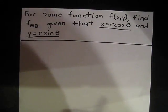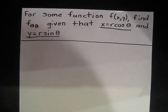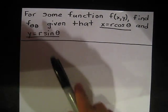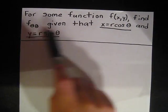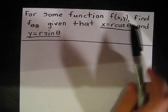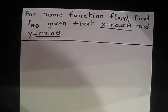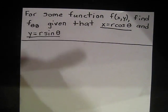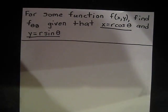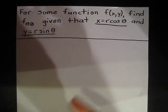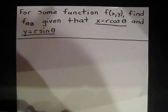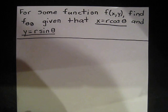The function at hand is a partial derivative problem. For some function f of xy, we need to find f sub theta theta, given that x is equal to r cosine theta and y is equal to r sine theta. This is a more challenging problem because we're not given a concrete function f of xy — it remains abstract. Let's get started.